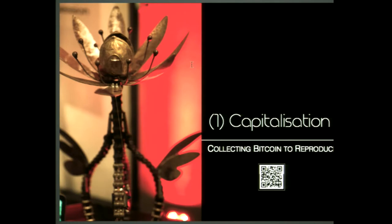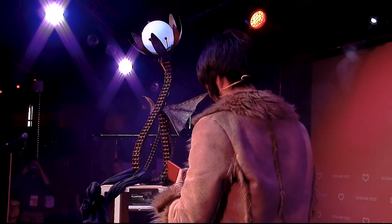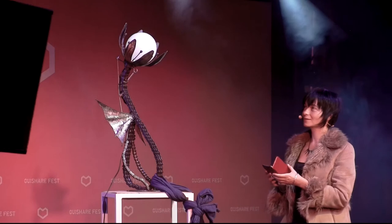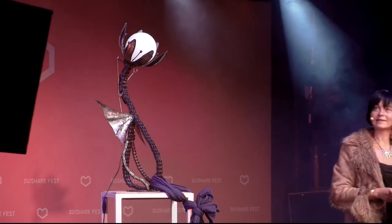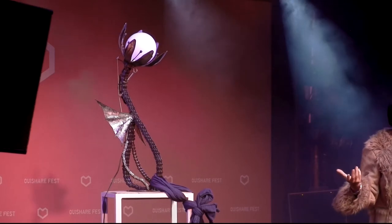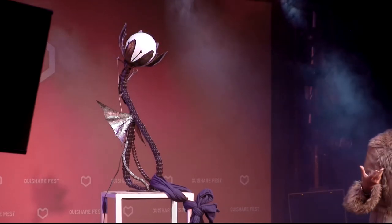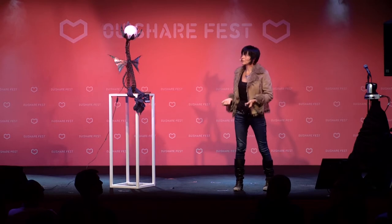The first step in the process of reproduction of a plantoid is the capitalization process, which is where the plantoid will actually beg human beings to give it some money in order to be able to reproduce itself. I will now do a demonstration — I will feed this plantoid with some bitcoins, and hopefully it's going to be thankful for that. The way it works is that the plantoid comes with its own Bitcoin wallet and it's constantly monitoring the balance of its own account. At some point, it realizes that it has accumulated a sufficient amount of funds in order to reproduce itself, which will trigger the smart contract on the Ethereum blockchain and lead to the second phase of reproduction, which is the mating phase.